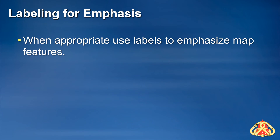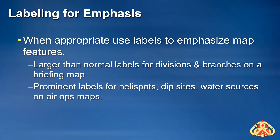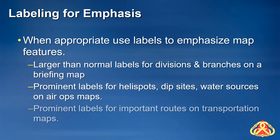Sometimes it may be appropriate to adjust the size of event point and assignment labels to make certain map features more prominent than others. For example, a briefing map is meant to be viewed by a large audience standing some distance away, so it may be appropriate to enlarge the division and branch symbols and labels so line assignments are clear even to those standing in the back. Likewise, you may enlarge air ops related points and labels on an air ops map to help a pilot pick them out more easily, or make transportation route labels for accessing the incident larger and more prominent than those for the surrounding network on a transportation map.